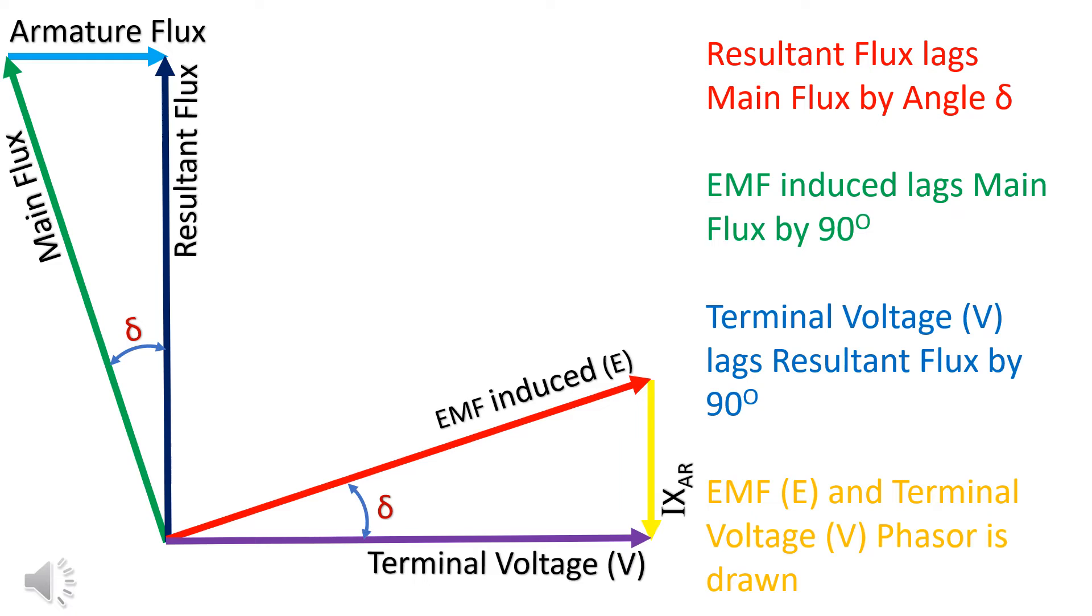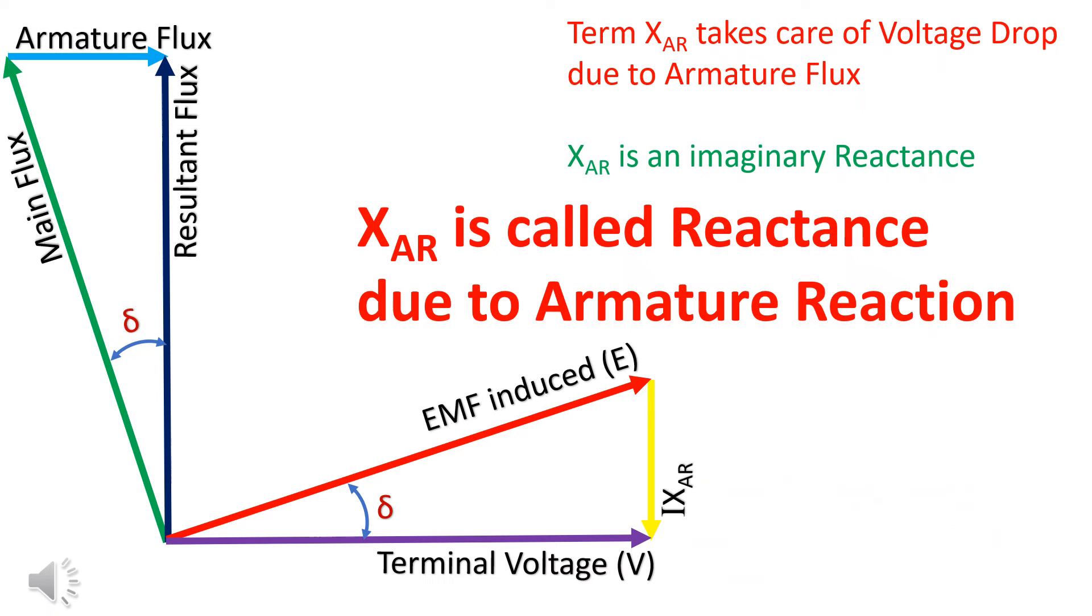Let us draw a phasor diagram. Phasors of EMF and terminal voltage are drawn perpendicular to the main flux and the resultant flux respectively. The phasor difference between EMF and V is denoted by IXₐᵣ. Xₐᵣ takes care of voltage drop due to armature flux. Xₐᵣ is called reactance due to armature reaction.